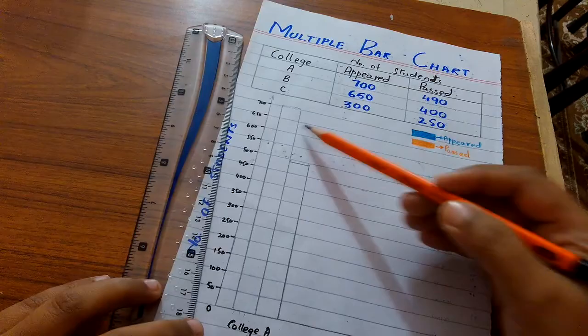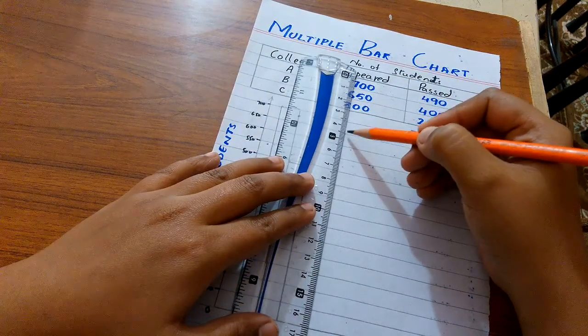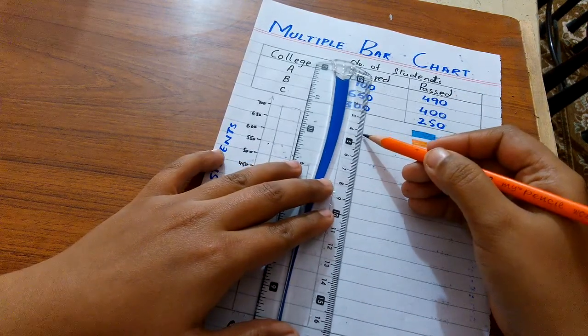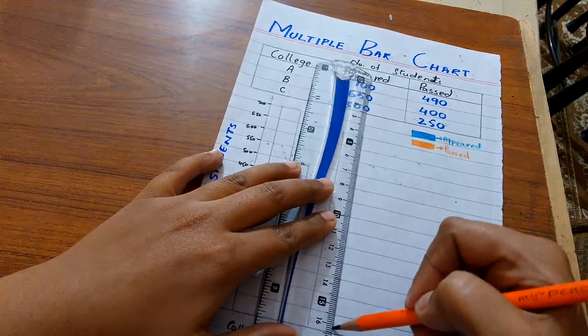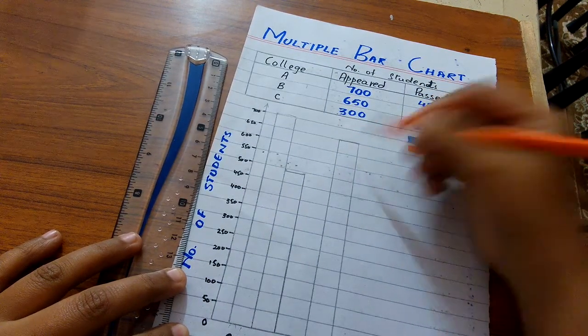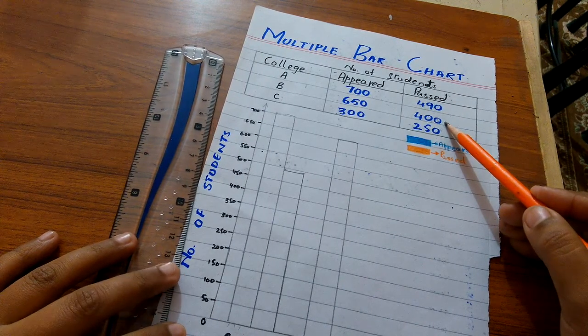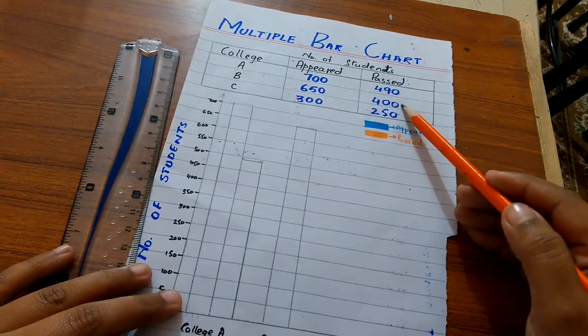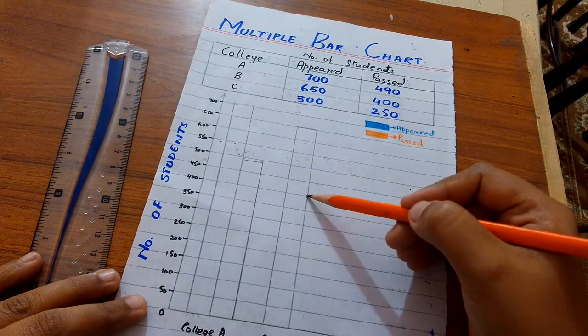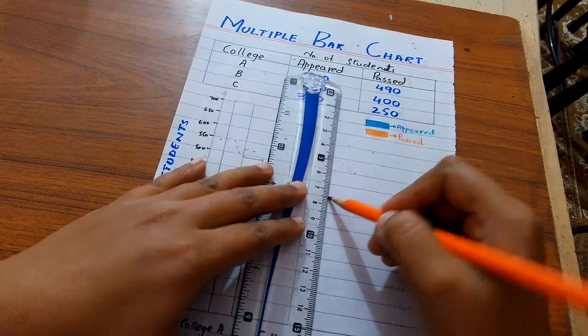Total number of students are 650. Here is our bar for the number of students who have appeared in exams from college B. Now its related phenomena is the number of students who have passed the exam. Number of students are 400. So I construct its graph jointly.